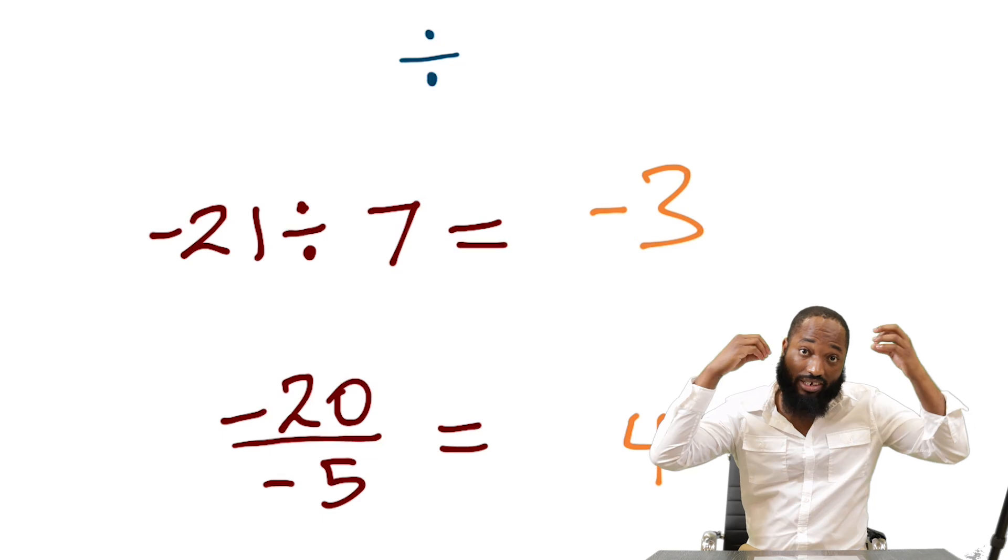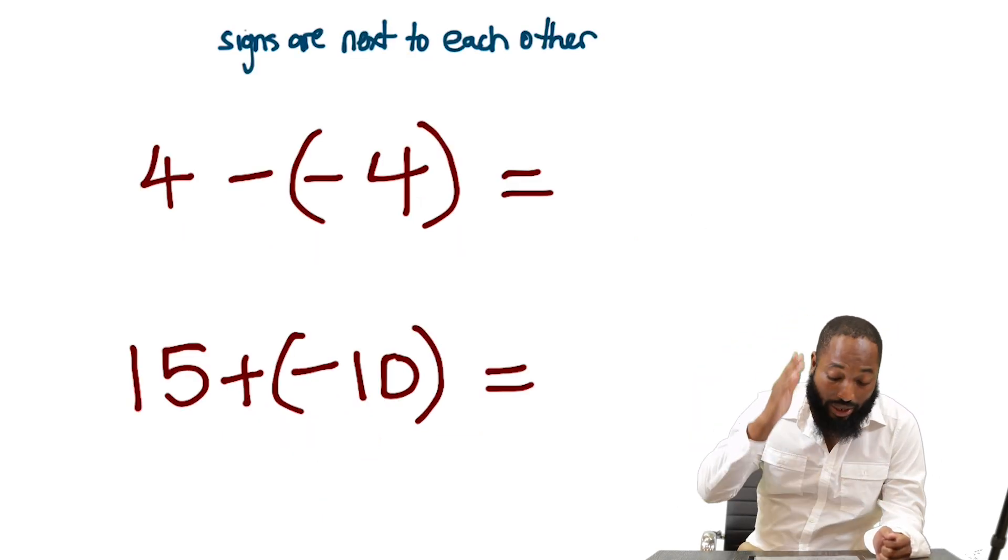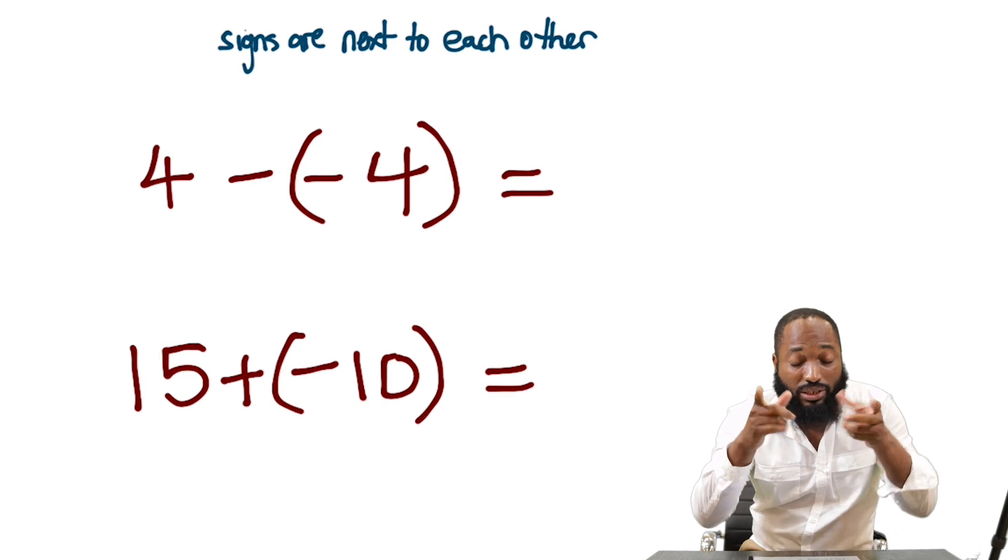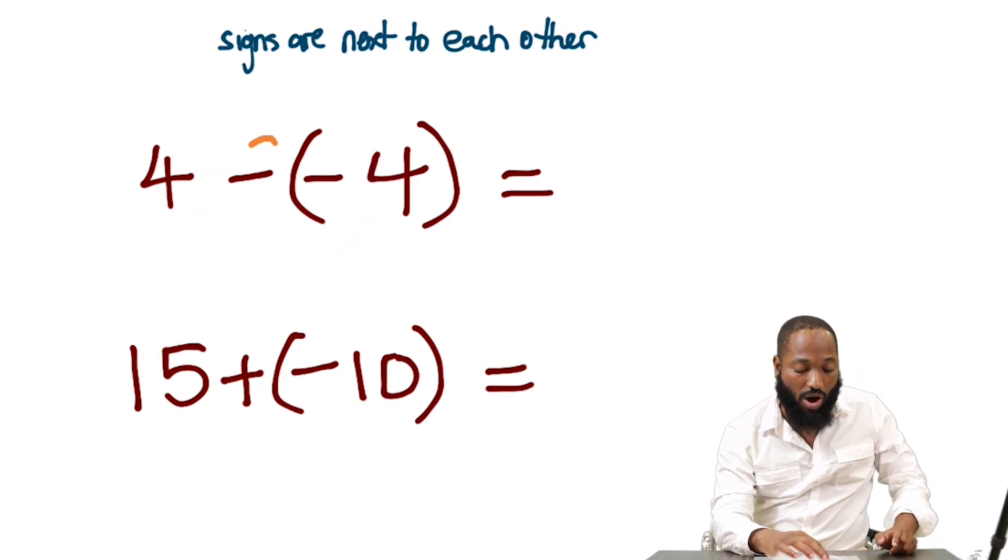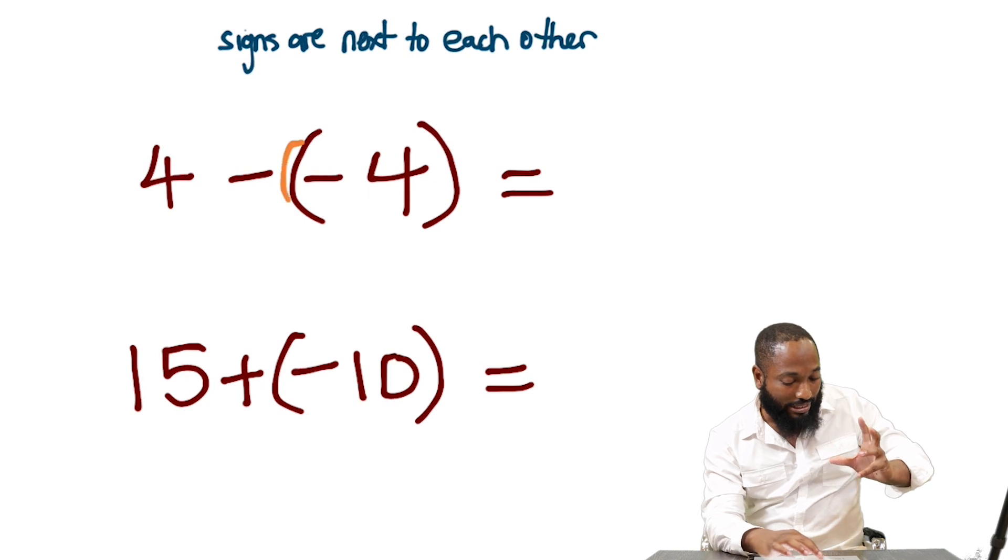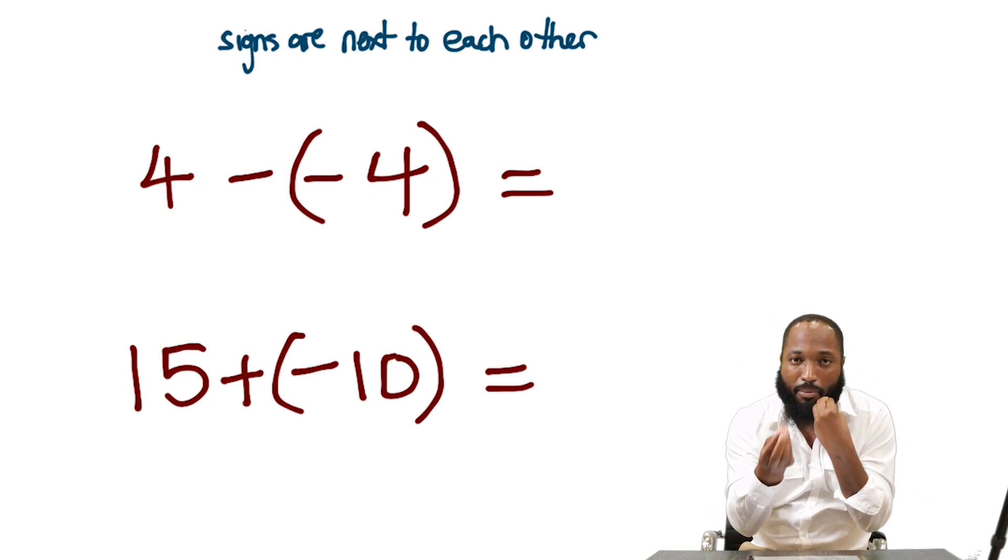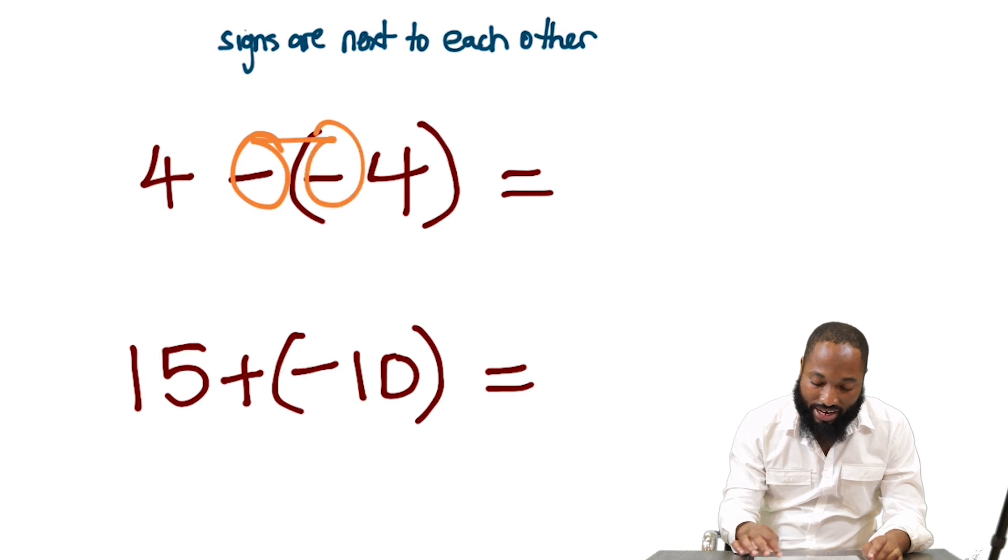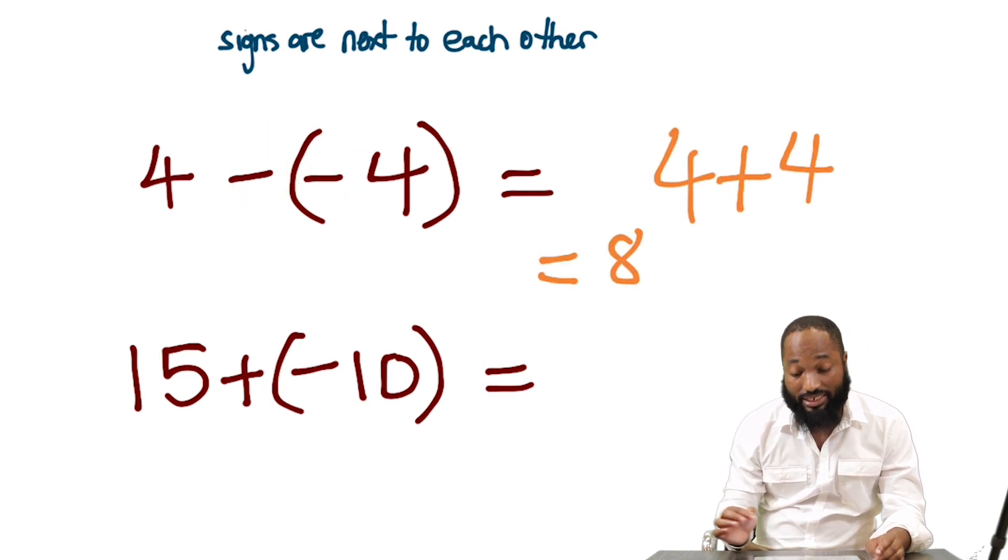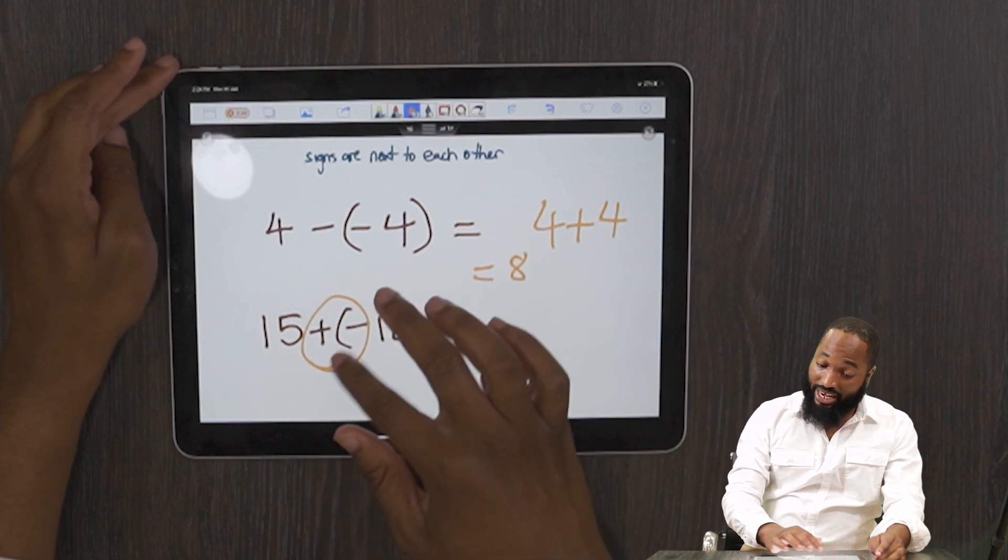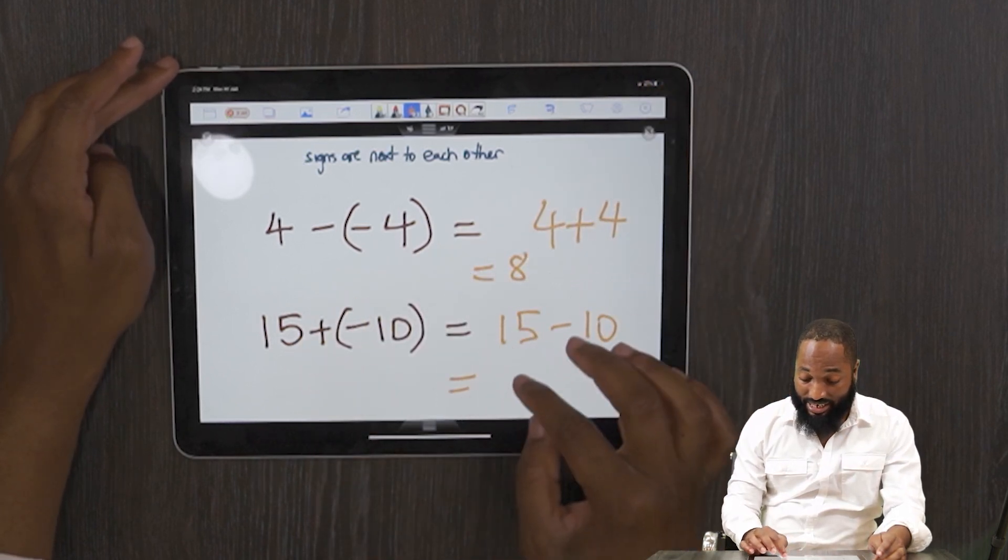And you already know, if the number is positive, we don't need to put the sign. It also works when two signs are next to each other. In maths, when two signs are next to each other, we like to convert it to one sign. Even if there's a bracket in between there, once there's no number in between, it means the two signs are next to each other. They are multiplying each other. So a negative and a negative sign is actually a positive sign. So the answer for this is 8. These two signs here next to each other would be negative. 15 minus 10, this is 5.